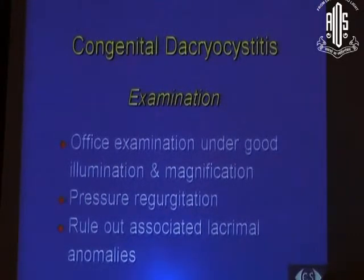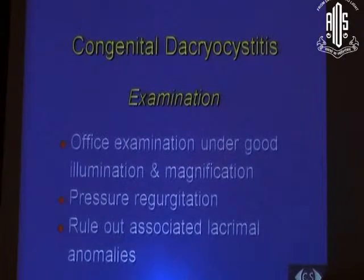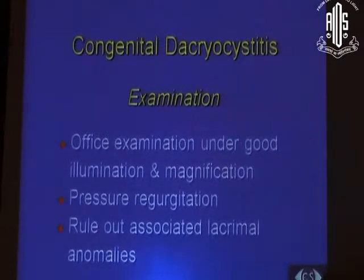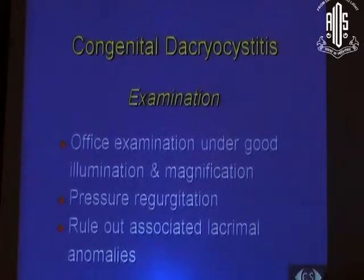You can use a 20-diopter lens held very close to the child's eye with a diffuse light for good magnification, or a 10-diopter lens in the direct ophthalmoscope held very close. Any source of magnification — a loop, for example — whatever keeps the child steady is what you need. Good illumination, magnification, and a steady child are key; even if the child is sleeping, that is a good time to examine.